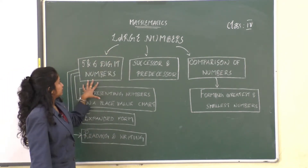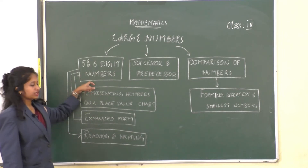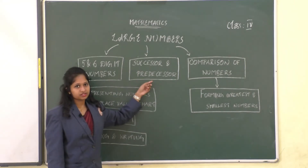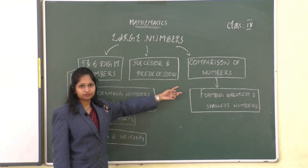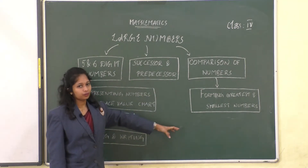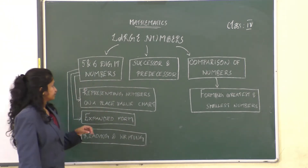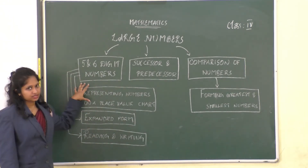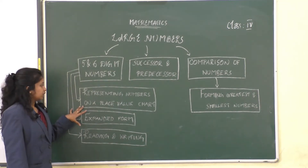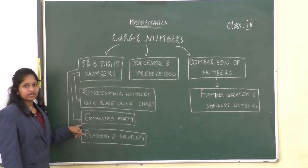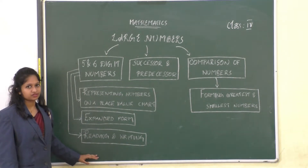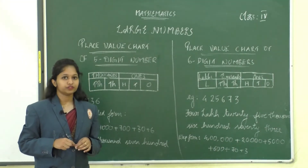In this video, the large numbers we are going to learn about are five and six digit numbers, the successor and predecessor of numbers, and comparison of numbers. In comparison of numbers, we'll learn how to form greatest and smallest numbers. Under five and six digit numbers, we'll be learning how to represent numbers on a place value chart, its expanded form, and how to read and write those numbers.